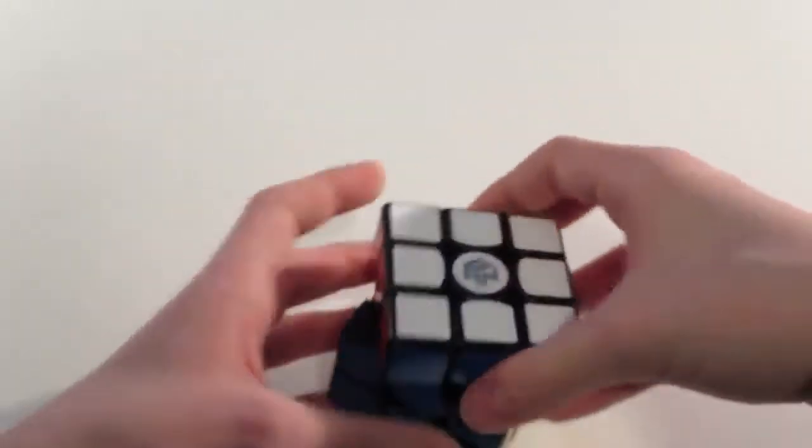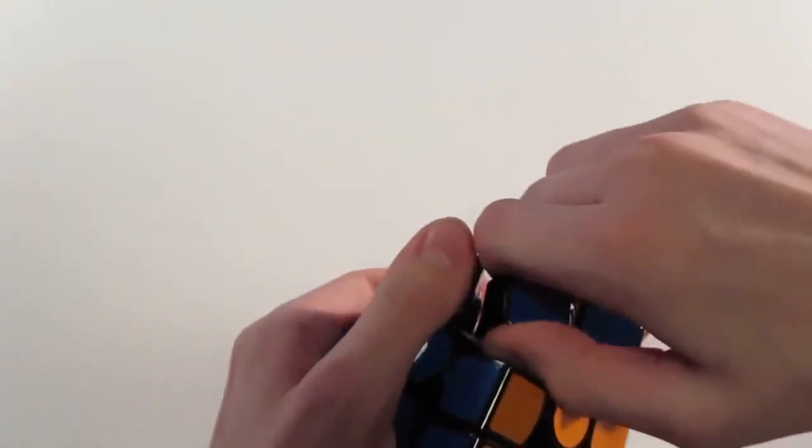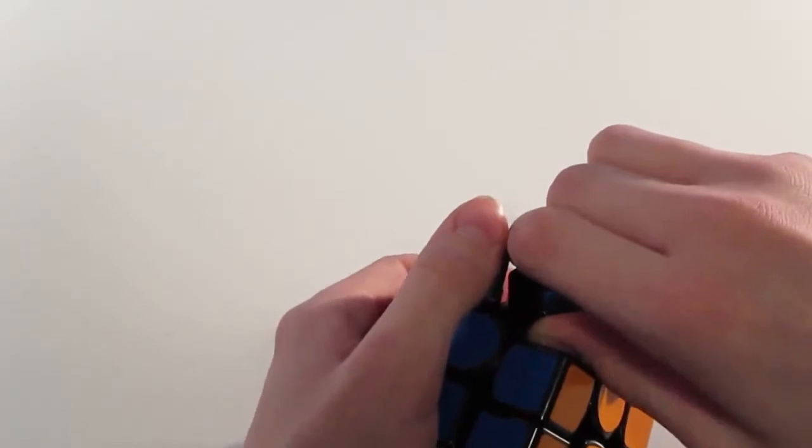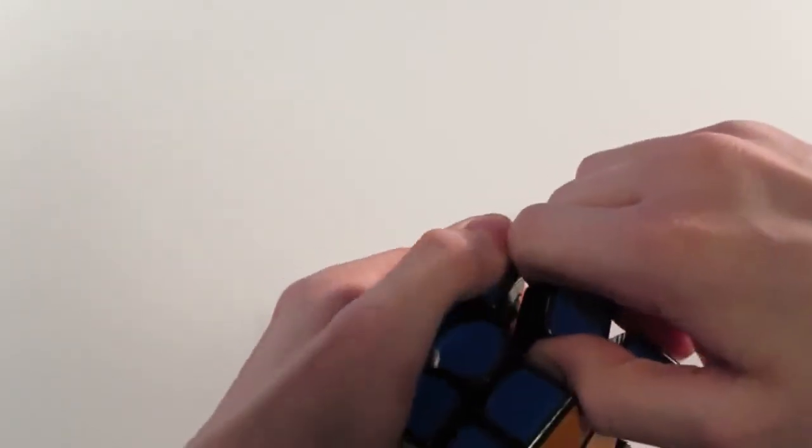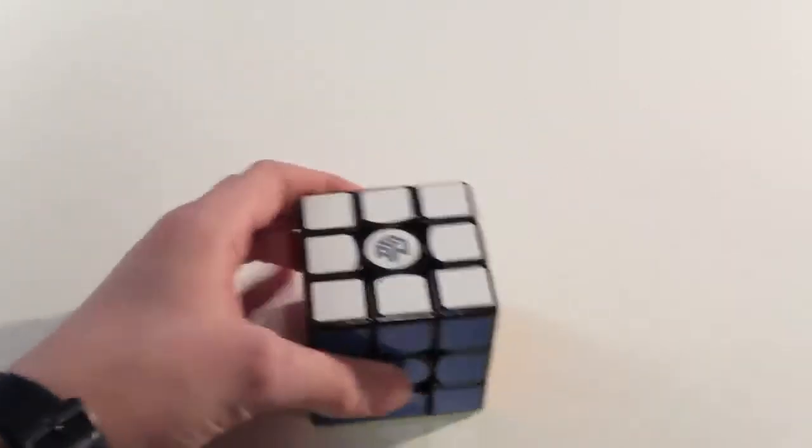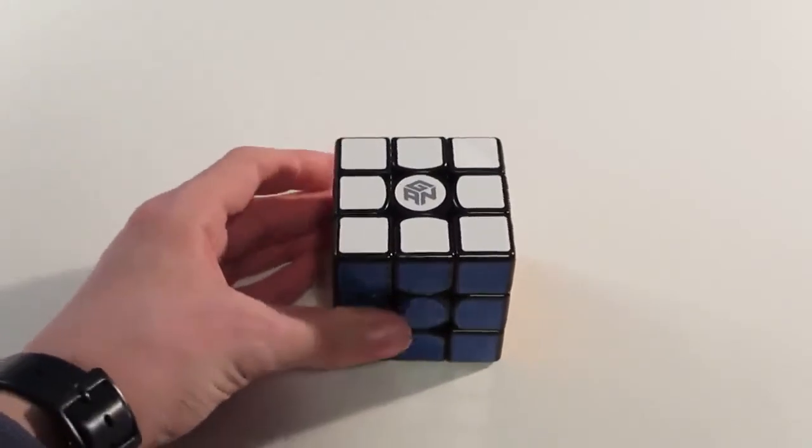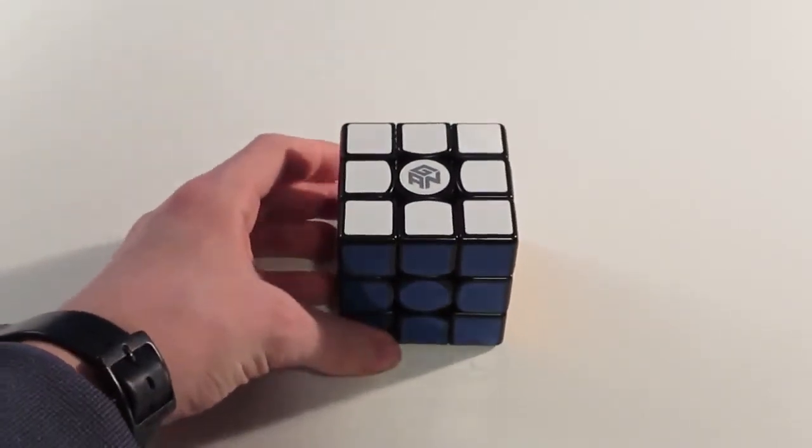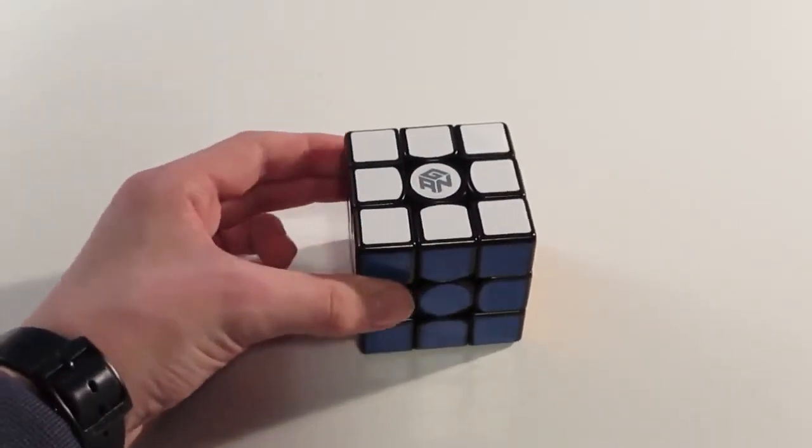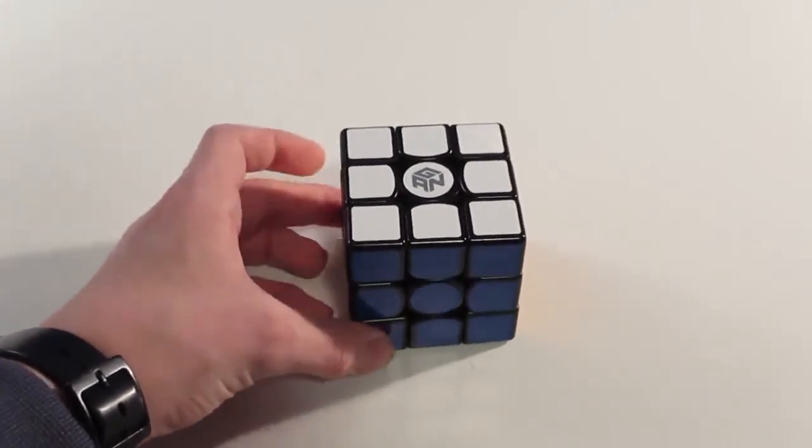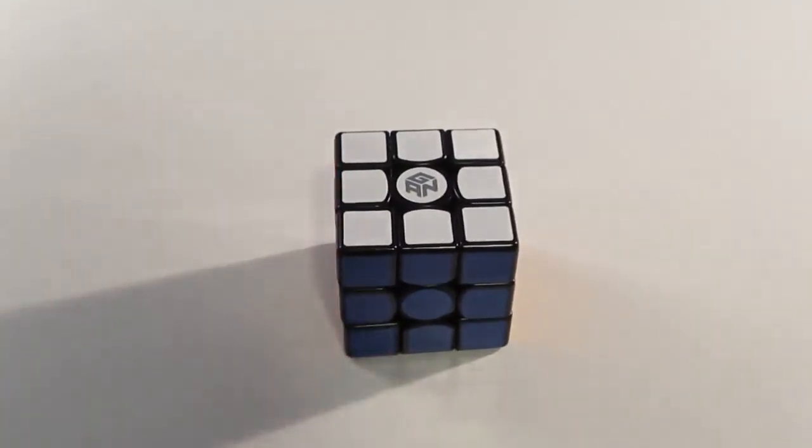And the mechanism of this cube, if I can take a piece out, which I probably can't. Yeah, I don't want to break it. But the mechanism of this cube, all you need to know is it holds together very well. I'm pretty sure it has a metal core, too, which makes it more stable and less flimsy than the Gans 357.